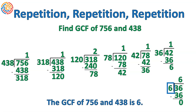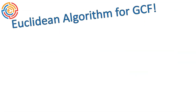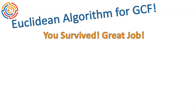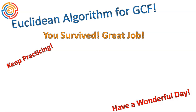This one took quite a few steps, but I'm wondering if it's probably still a little quicker than listing all the factors of those two large numbers. Put your thoughts in the comment box — do you think this method saves time on larger numbers even with many steps? You have officially survived the Euclidean algorithms for greatest common factors lesson. Keep practicing and have a wonderful day.